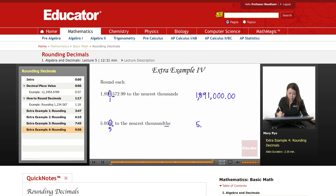So 5.055. And then this becomes a zero right there. So that's it for this lesson on rounding decimals. Thank you for watching Educator.com.